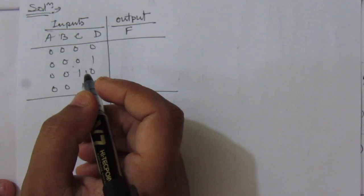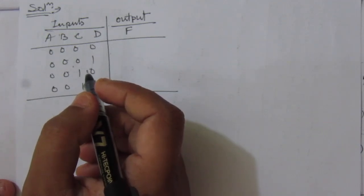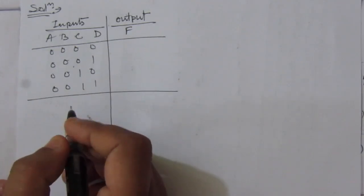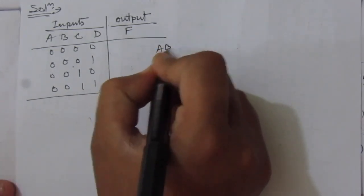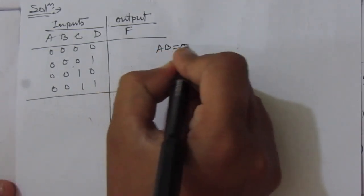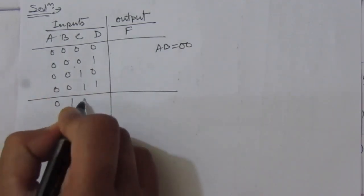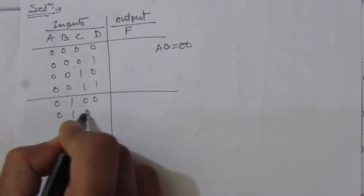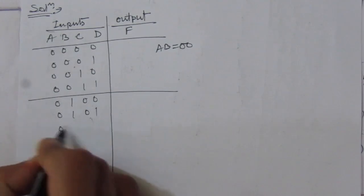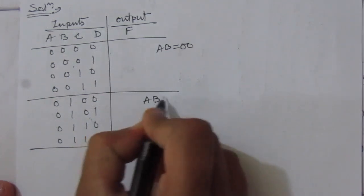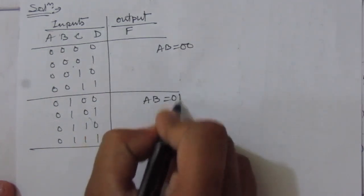Then for AB equal to 01, the next combinations will be 0,1,0,0 then 0,1,0,1 then 0,1,1,0 then 0,1,1,1. Here we have AB equal to 01. The next inputs for AB equal to 10 will be 1,0,0,0 then 1,0,0,1 then 1,0,1,0 then 1,0,1,1.